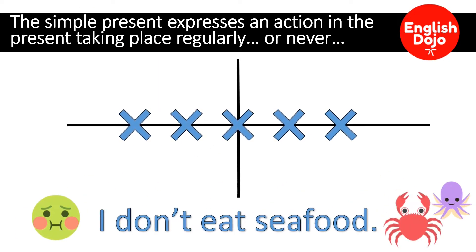Another example. I don't eat seafood. Yo no como mariscos. Este es un ejemplo donde podemos ver que el presente simple también expresa cosas que no ocurren, que nunca ocurren. En este caso es un gusto. I don't eat seafood. No me gusta. No como mariscos.